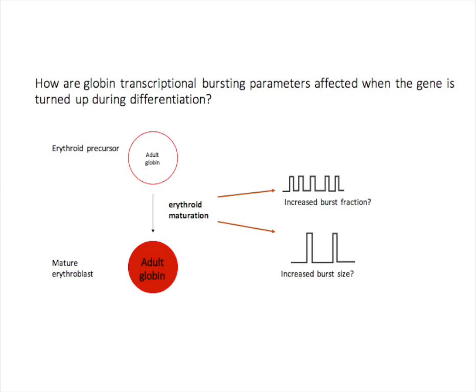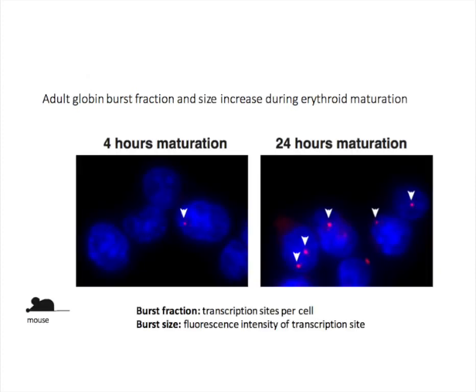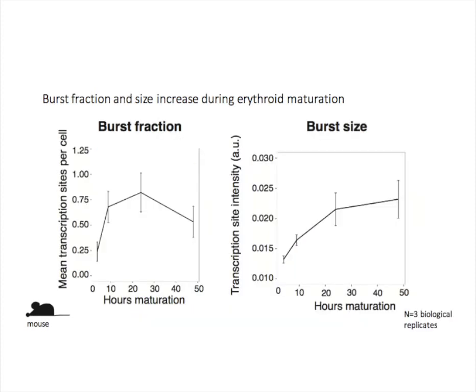I chose to study the regulation of these bursting parameters at the beta-globin locus, which encodes the hemoglobin protein in red blood cells. I used a mouse red blood cell line called G1E-ER4 cells. They start in a precursor state, and when we add a drug, they undergo differentiation and upregulate hemoglobin production. What you can see from these images is that transcription of the globin gene becomes more frequent later in differentiation. Burst size also increases, which you can see by an increase in fluorescence intensity of the transcription sites. In multiple experiments taking several time points in differentiation, both burst fraction and burst size of the globin gene increase.